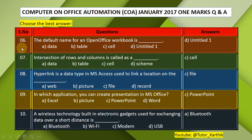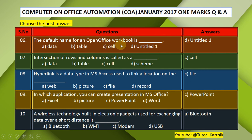Question 6: The default name for an OpenOffice workbook is —. A. Data, B. Table, C. Cell, D. Untitled 1. The correct answer is D — Untitled 1. When you open an OpenOffice workbook, the document is named Untitled 1 until you enter a name and save it.